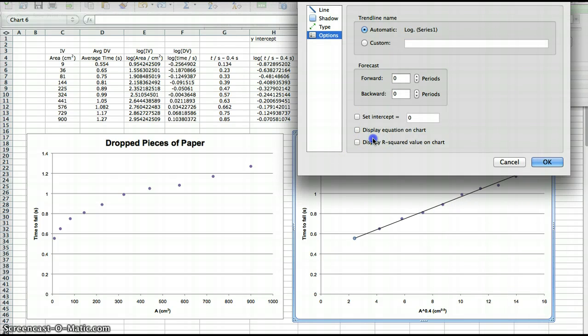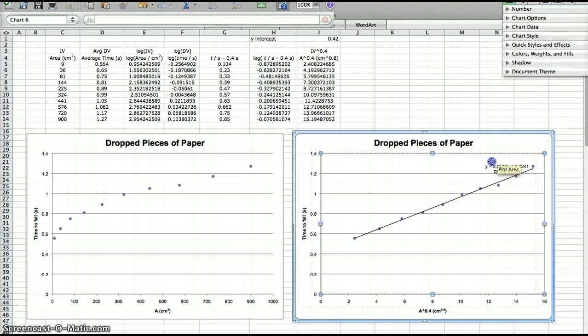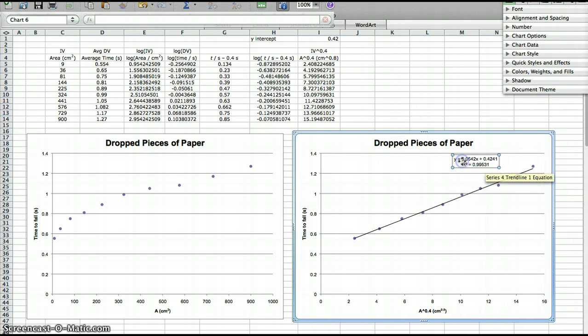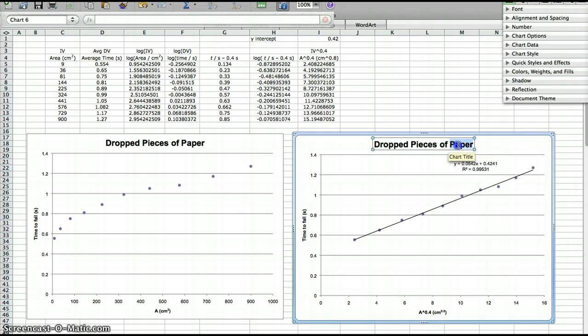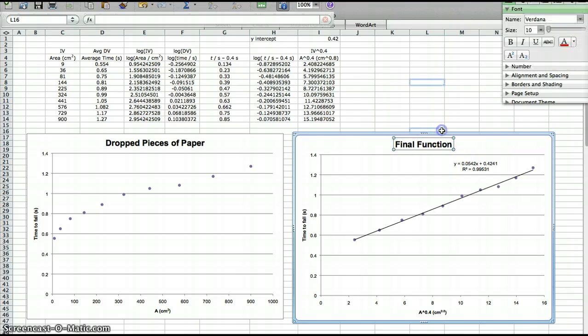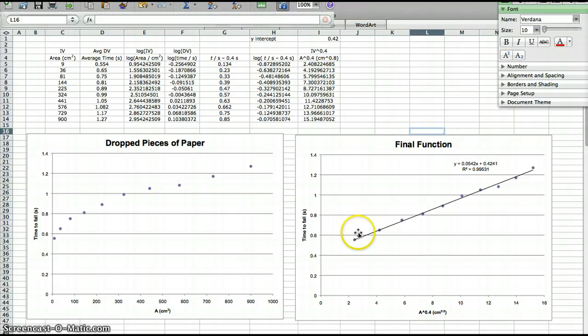Now I don't have my error bars. I'm ignoring error bars for the moment. That's a separate analysis. So what I wanted to show you here was how to get the true power when your data has this significant y-intercept.